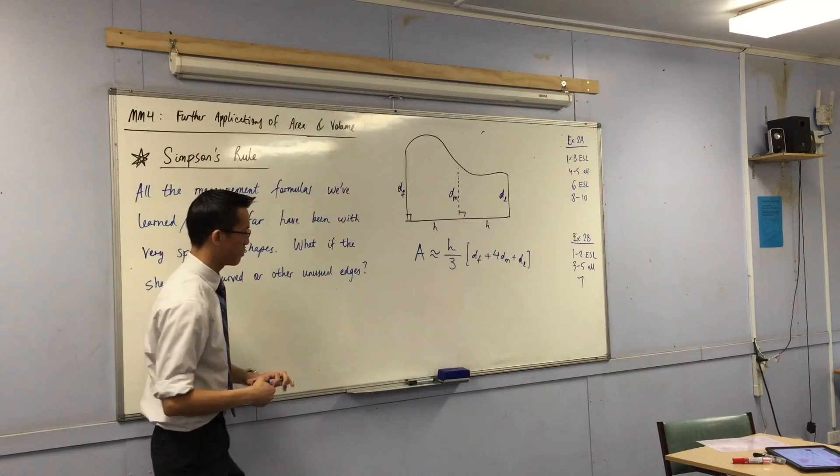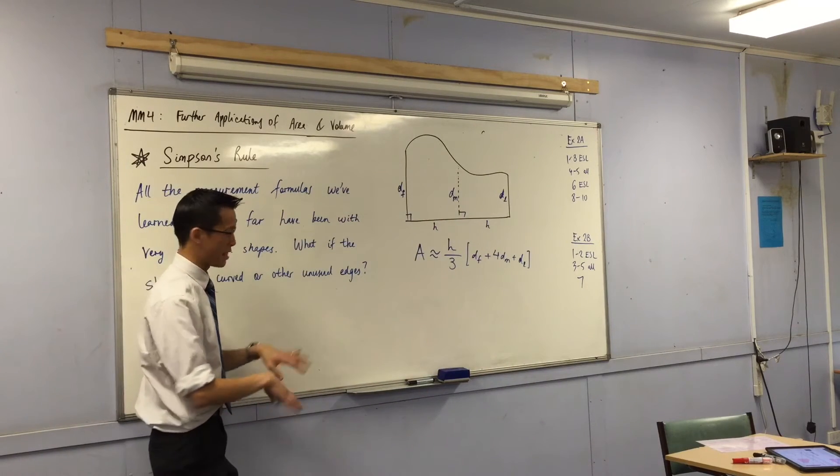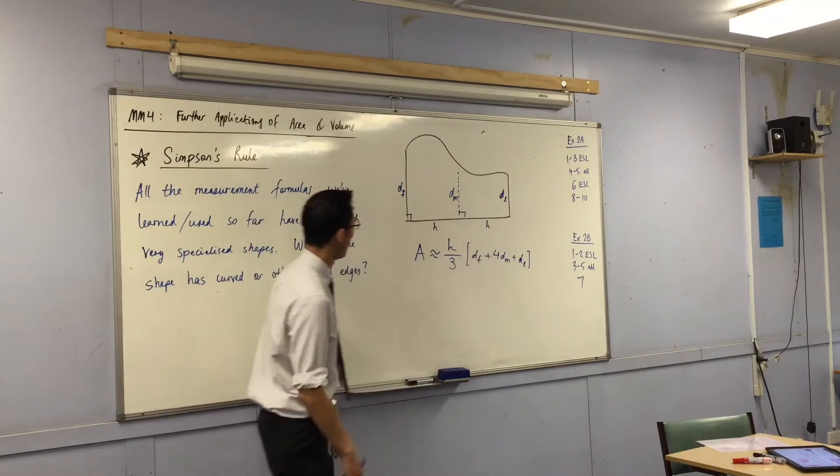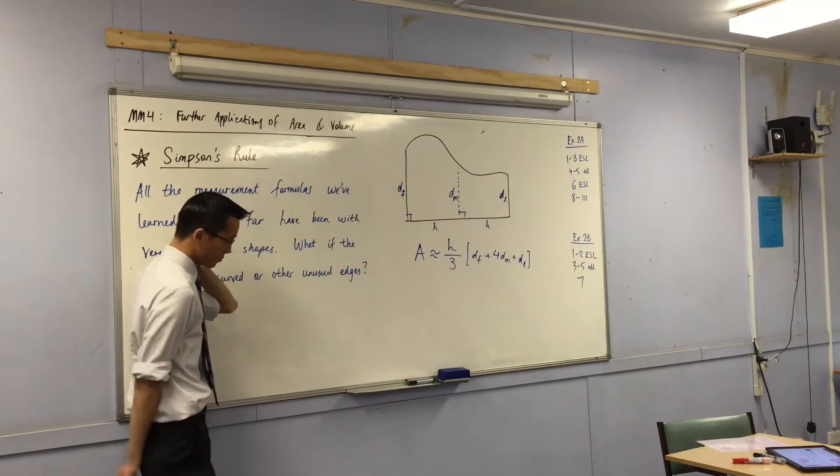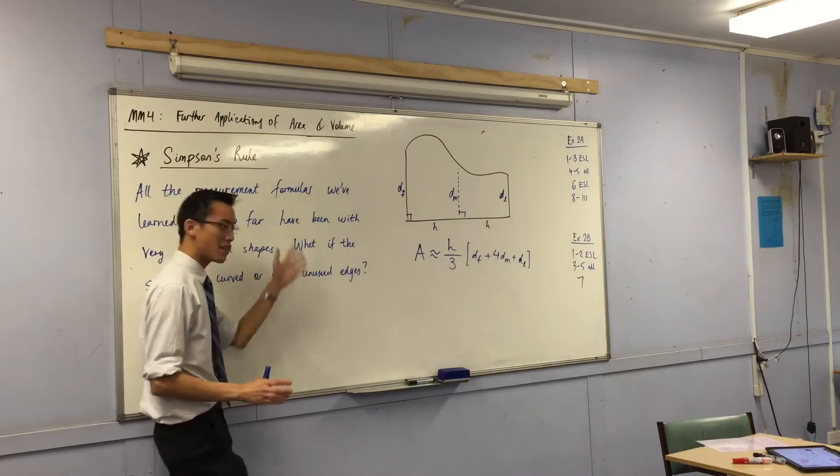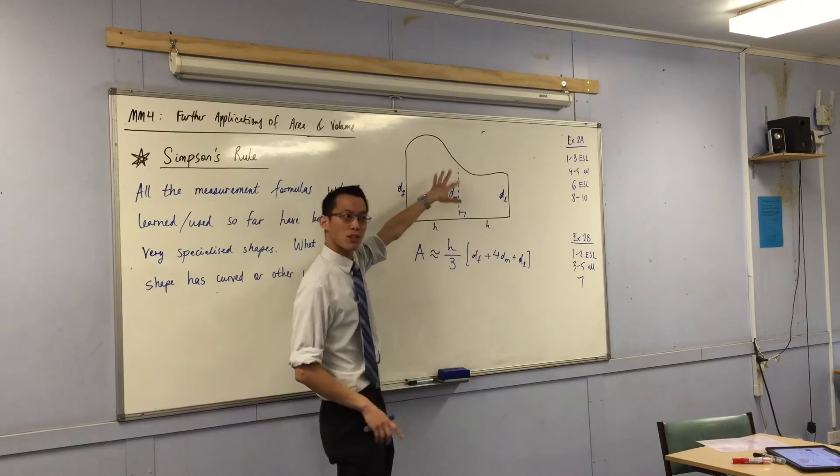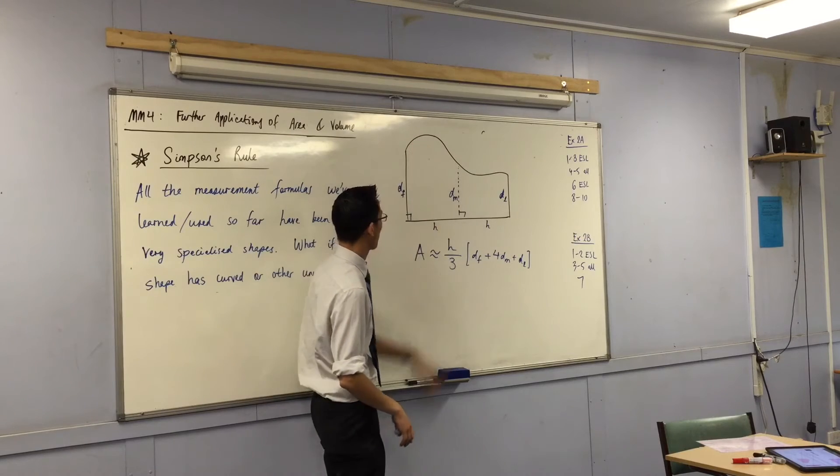Now, that's a bit weird and random. There is some fancy schmancy theory and maths behind where this formula comes from. You can ask me about that later on if you're curious, but the important thing is, it does an amazingly good job of getting an approximation of this area.